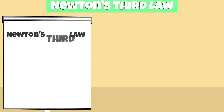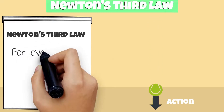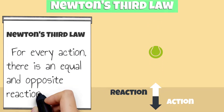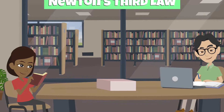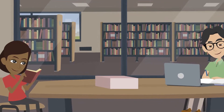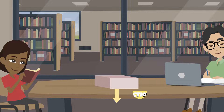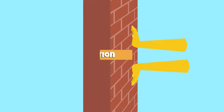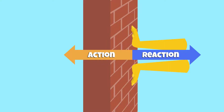Newton's third law of motion states that for every action, there's an equal and opposite reaction. An example of this is a box and a table. As gravity pulls the box down, the table exerts an equal and opposite force upwards, keeping the box in its place. Another example is when you push on a wall — the wall pushes back on you with an equal force.